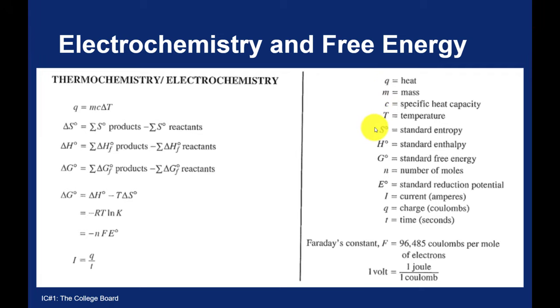C for specific heat capacity, temperature, entropy, enthalpy, free energy, moles. Here you'll see that the college board just uses a capital E instead of the epsilon for standard reduction potentials. It's just a little bit more clear to see.